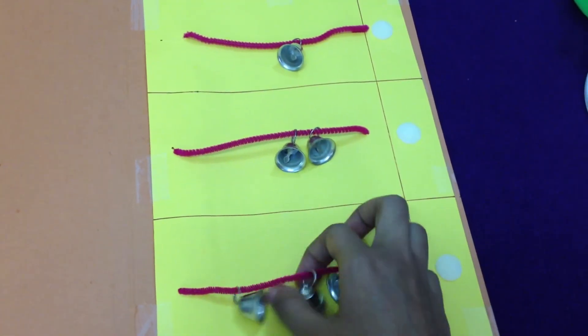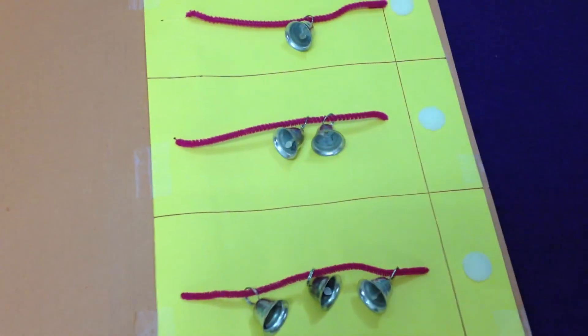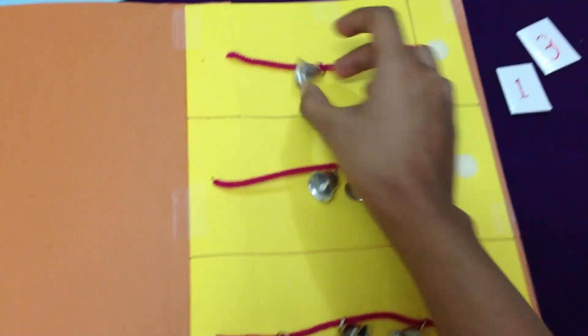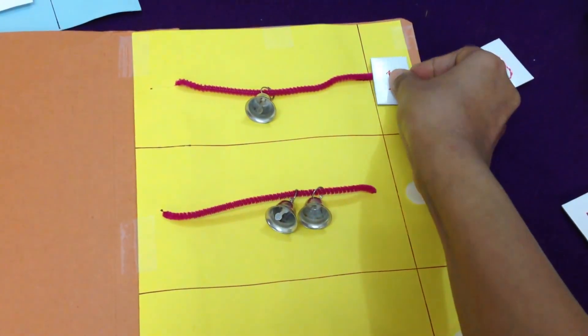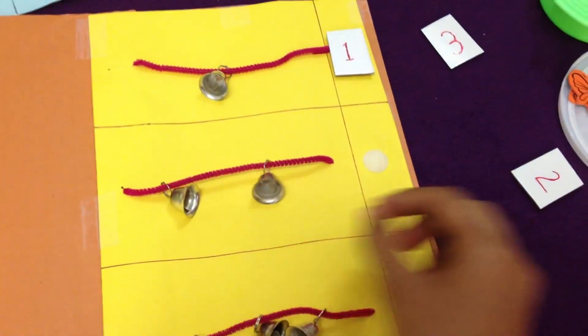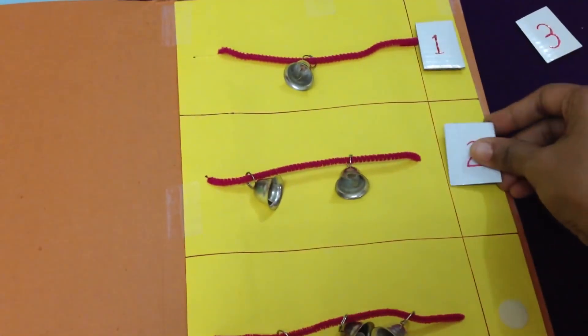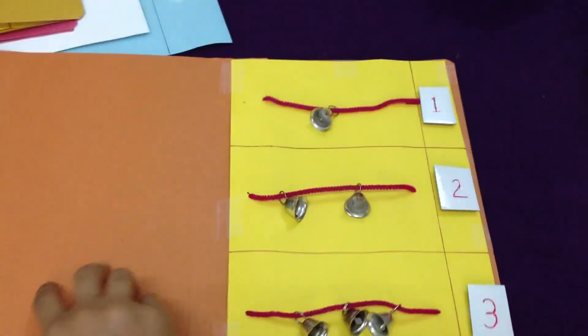You can use a string if you don't have bells. You can use whichever objects you want. All that he has to do is match the correct numbers. How many bells are here? There's only one bell, so he puts one here. What about this one? Two. There are two bells, so two. That's how he'll match.